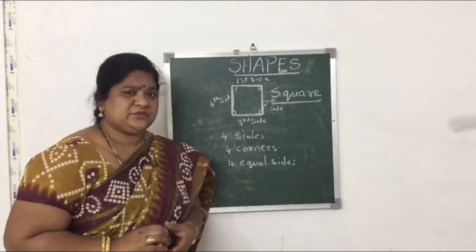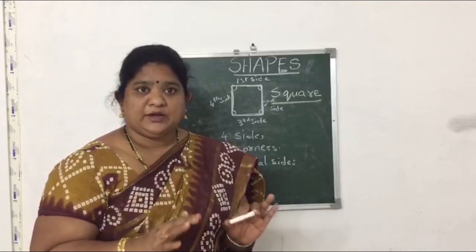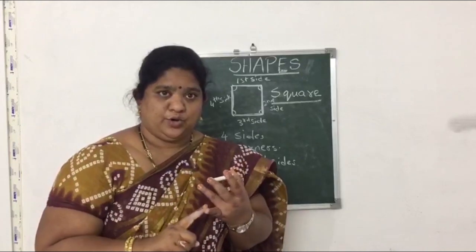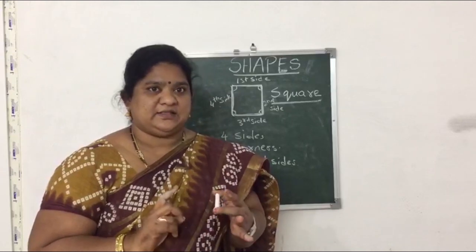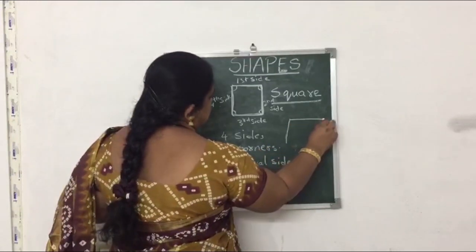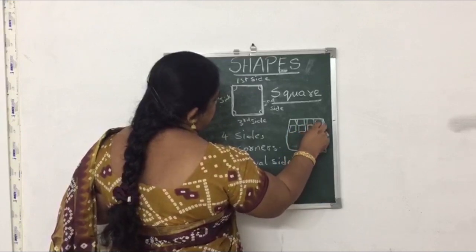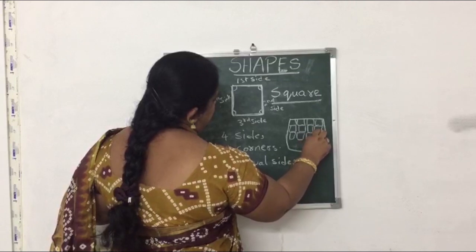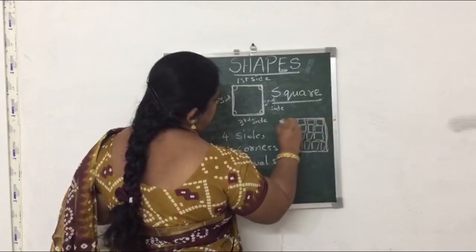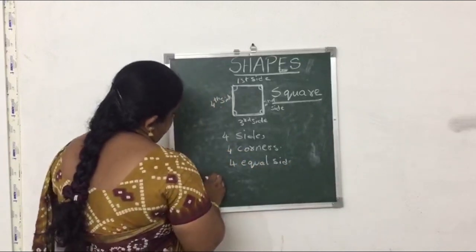Do you play chess? Chess board is like this — it has black and white checks in it. It is also in square shape. Tell me some examples of square, children. Carrom board, bread slice, chess board. This is called square. What is the spelling of square? S-Q-U-A-R-E. Square.